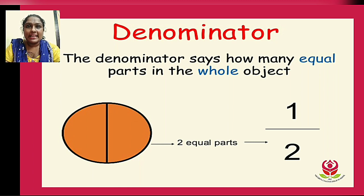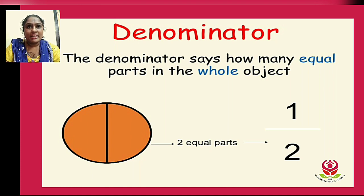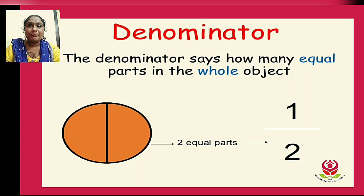To summarize: the numerator always represents the number of shaded parts, and the denominator represents the total number of parts in the whole object. In this way you frame a fraction when there is a pictorial figure.